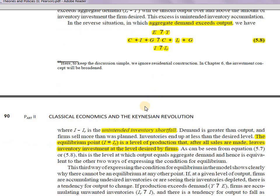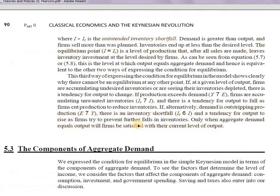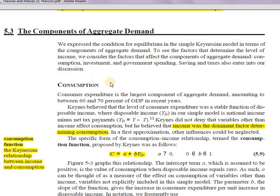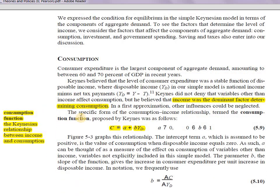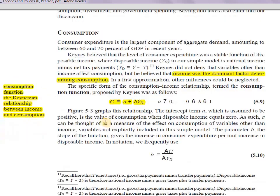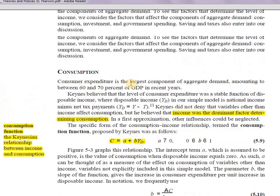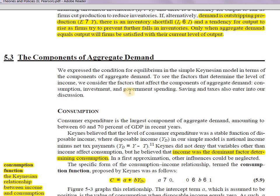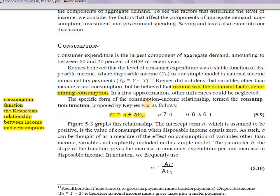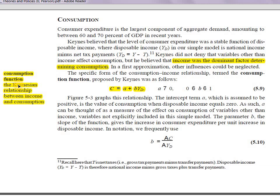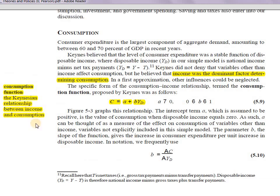Now we look at the components of aggregate demand in detail. This chapter carries very high utility because many exam questions come from it directly and indirectly. Aggregate demand comprises consumption plus investment plus government spending. We'll examine each component — starting with the consumption function.